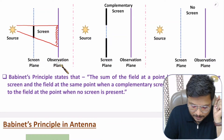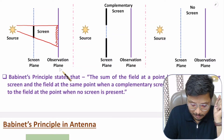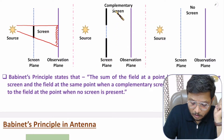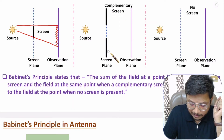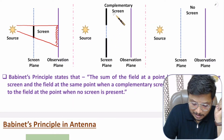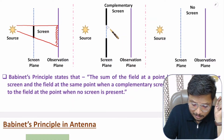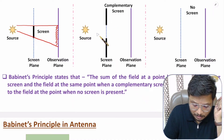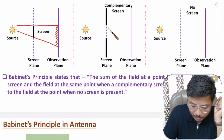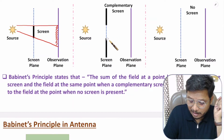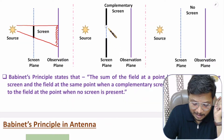In the second scenario, we are considering a complementary screen on the screen plane. Previously we had a screen in a certain portion. Now in that same portion we don't have screen — instead, all other portions have screen. That is the complementary screen.